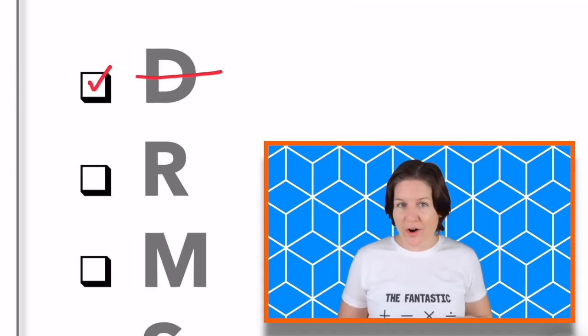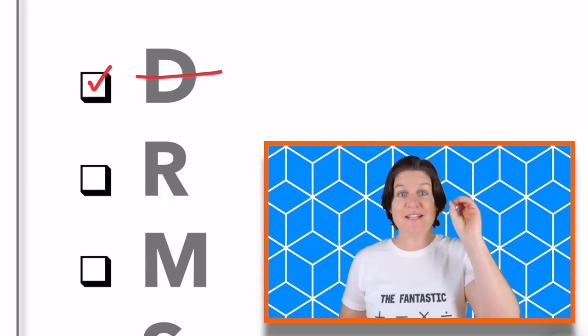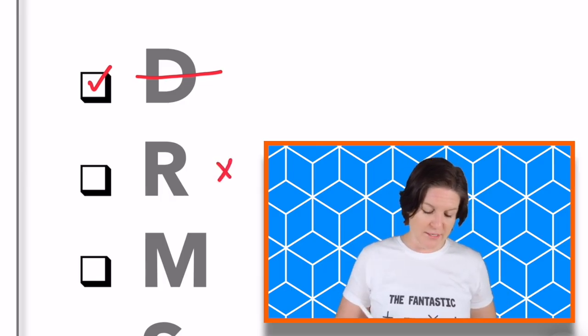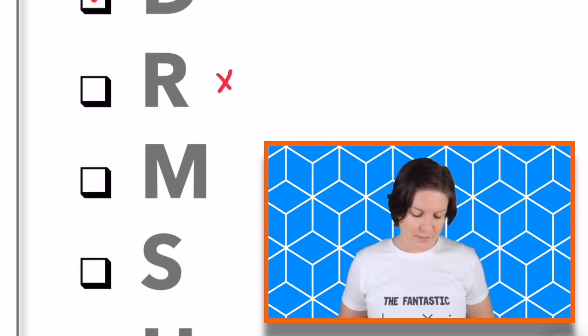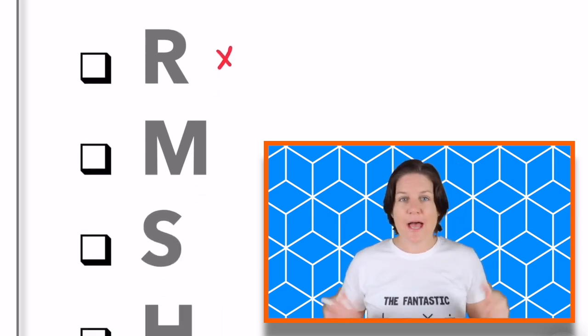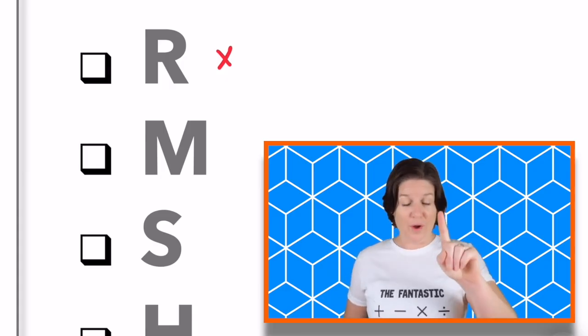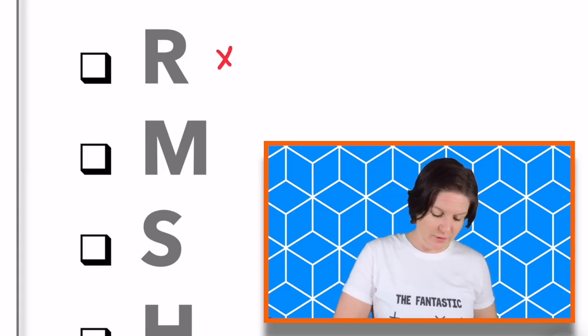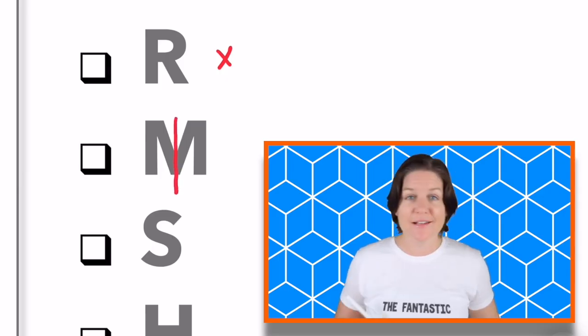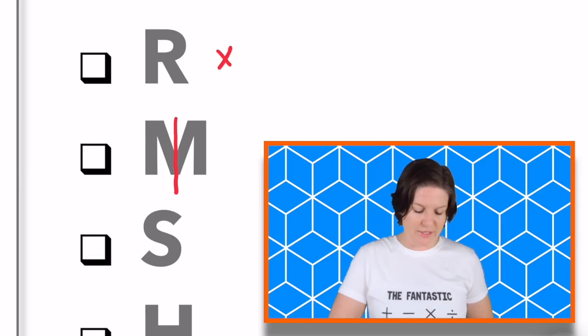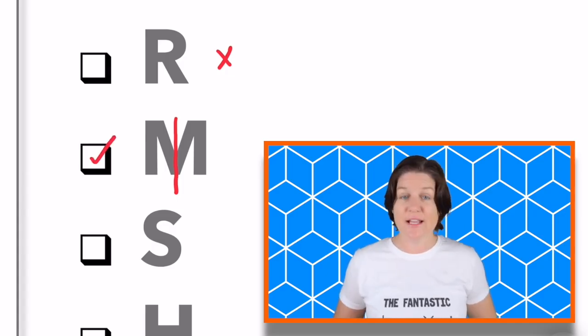For the letter R, how many lines of symmetry did you find? It should be zero. There are zero lines of symmetry, so we can eliminate that one. All right, looking at the letter M, how many lines of symmetry did you find? One is correct. It would be right here. Is that what you had? All right, if it is, great. If not, go ahead and make that correction. And also, we need to make sure that we select that one.